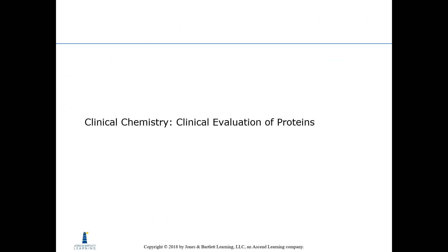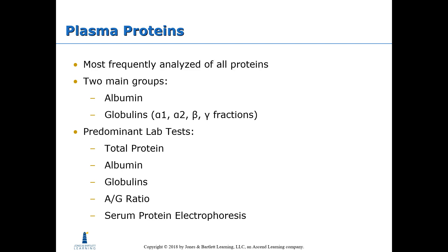Clinical Chemistry: Clinical Evaluation of Proteins. Plasma proteins are the most frequently analyzed of all proteins. There are two main groups of plasma proteins: albumin and the globulins. The globulins are broken down into four different fractions — alpha-1, alpha-2, beta, and gamma. The predominant lab tests performed on proteins include total protein, albumin, globulins, the albumin-globulin ratio (A/G ratio), and serum protein electrophoresis.